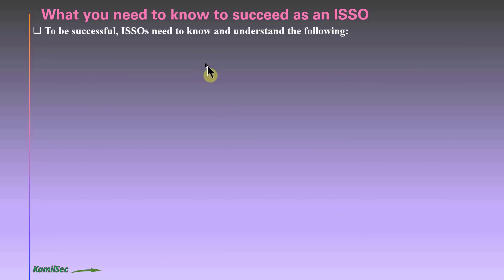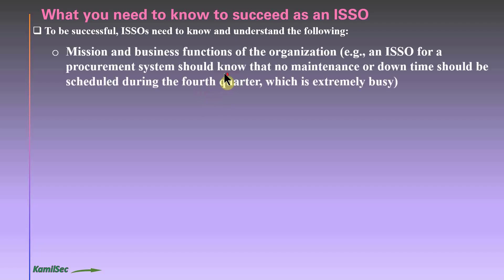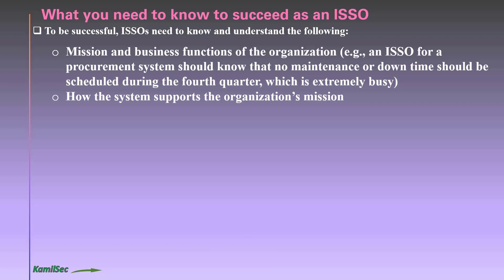To succeed as an ISSO, you need to know and understand the mission and business functions of the organization. For example, an ISSO for a procurement system should know that no maintenance or downtime should be scheduled during the fourth quarter, which is extremely busy. You also need to know exactly how the system supports the organization's mission.